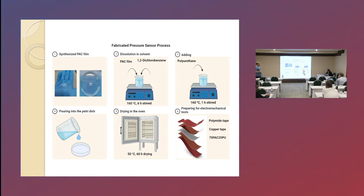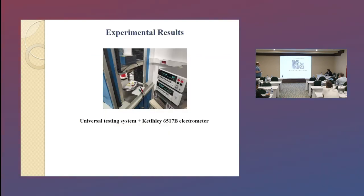This polymer, copper is used for top and bottom electrode and polymer tape is used for encapsulation layers. This is our experimental room, experimental devices. This is a universal testing system used for applying pressure. This is a Keithley 6517B electrometer used for measuring the resistance because this polymer's resistance is very high, higher than 10 gigaohm.